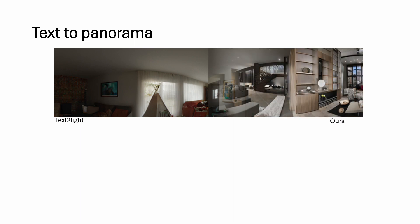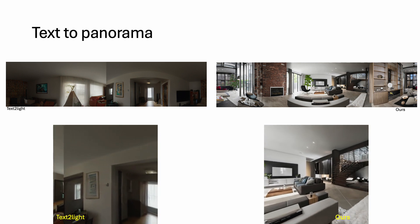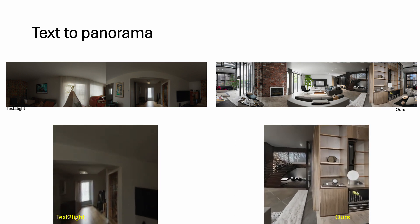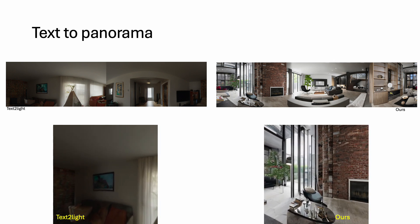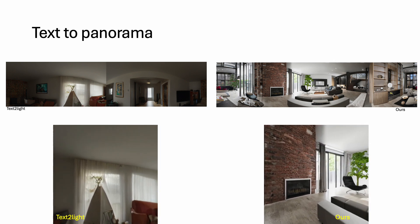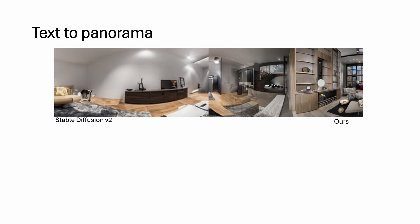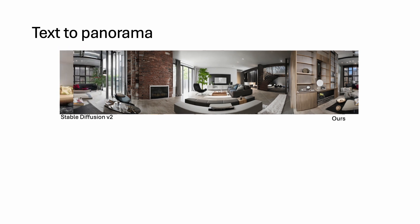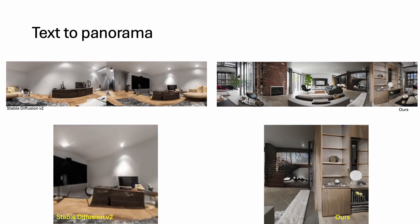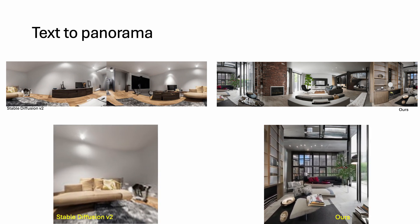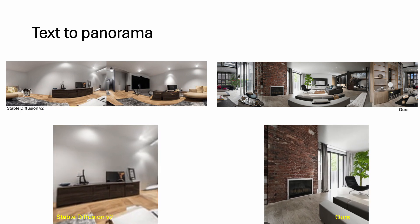Text-to-Light and LDM3D may produce outputs that do not satisfy the input description, such as a non-modern room when asked for a modern one. In the meantime, these methods cannot smoothly close the 360-degree loop, similar to the Stable Diffusion v2 model. Combining with conditional diffusion models, our method can effectively generate panoramas from inputs beyond a single image, such as text descriptions.